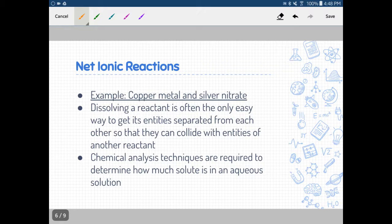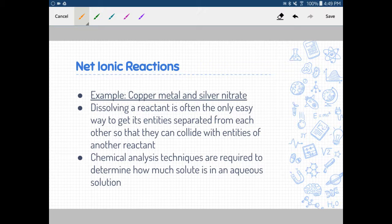Let's look at the concept of net ionic equations. Net ionic equations tell us what is really going on in a chemical reaction, a bit more than a standard chemical equation. Looking at copper and silver nitrate: dissolving in a solvent separates entities so they can collide with entities of another reactant. When an ionic compound dissolves in water, it dissociates into two ions because of dissociation, and those dissociated ions can then collide with different entities — in this case, copper metal. Chemical analysis techniques are required to determine how much solute is in an aqueous solution.